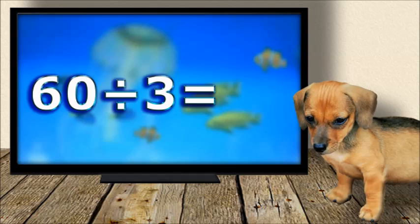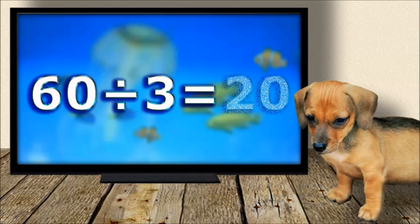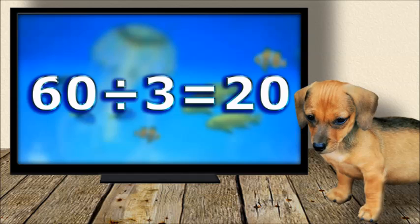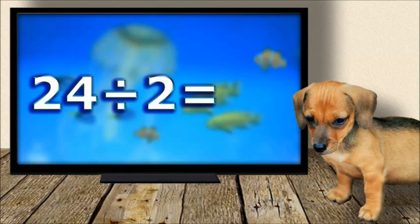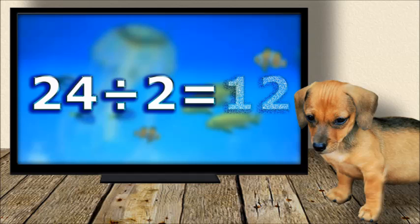Sixty divided by three equals twenty. Twenty-four divided by two equals twelve.